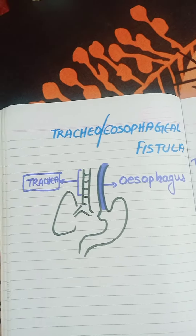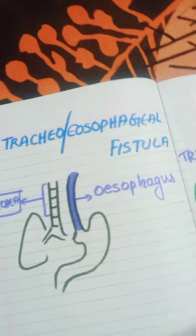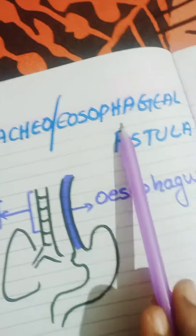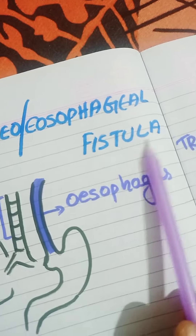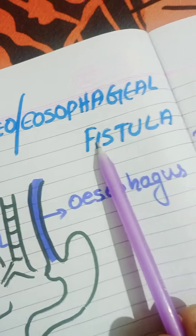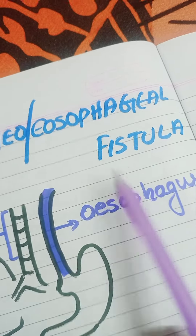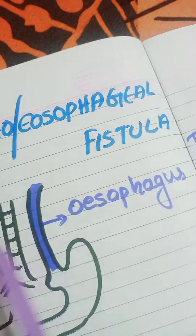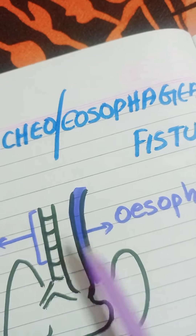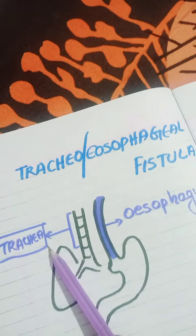Hello, today we are going to study about tracheoesophageal fistula. What do you mean by a fistula? A fistula is an abnormal connection between any two points. For a normal person, there is no connection between the trachea and esophagus.